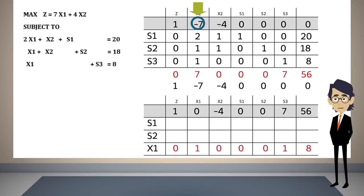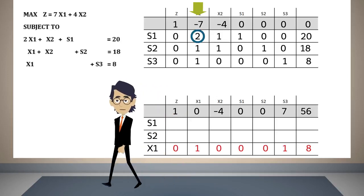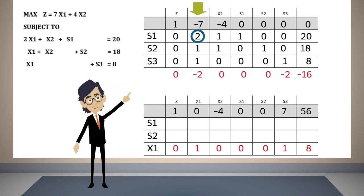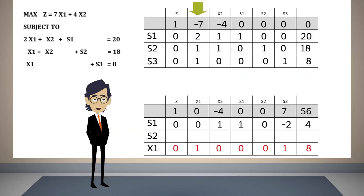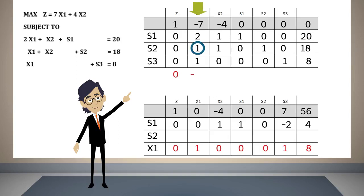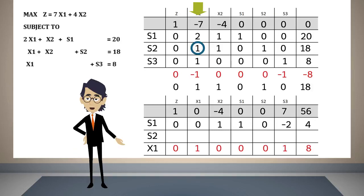In the same way we converted minus seven to zero, we now convert the two to zero. We multiply the pivot row by minus two and add it to the row where the two appears. The result is placed in the s1 row. Now we transform the one in the s2 row to zero. We multiply by minus one the pivot row and add it to the s2 row. The result is placed in the new s2 row.